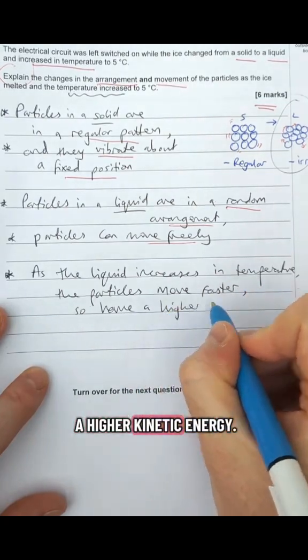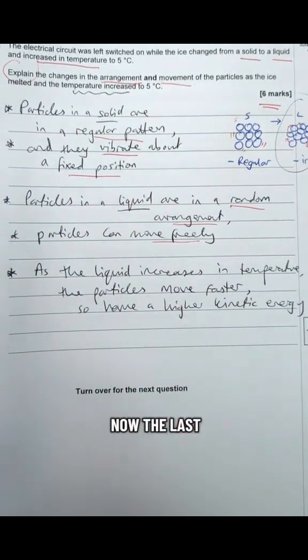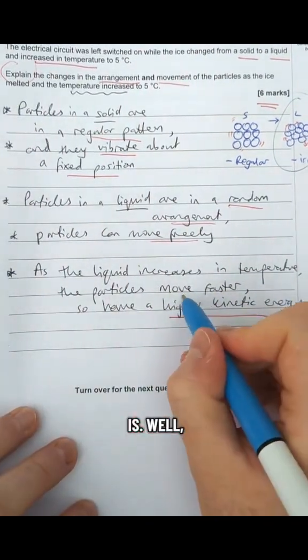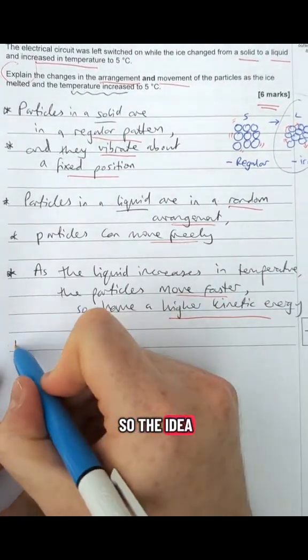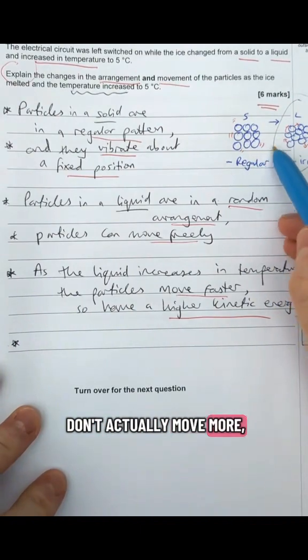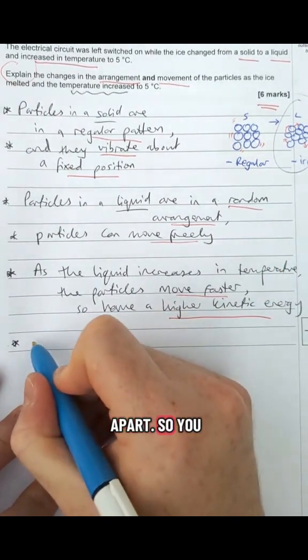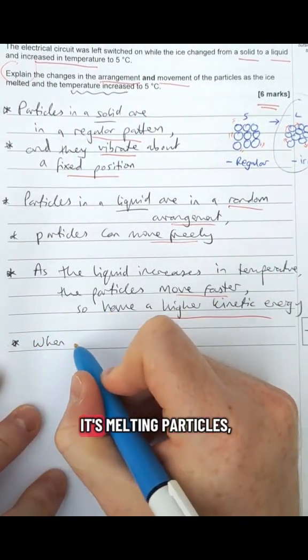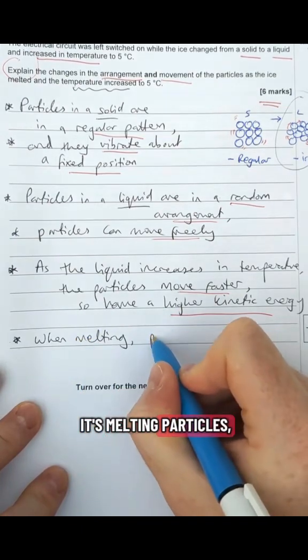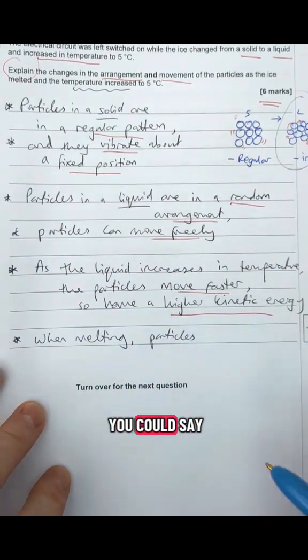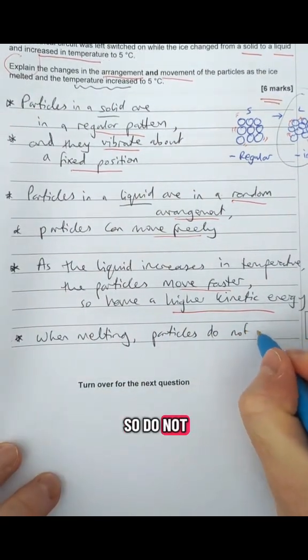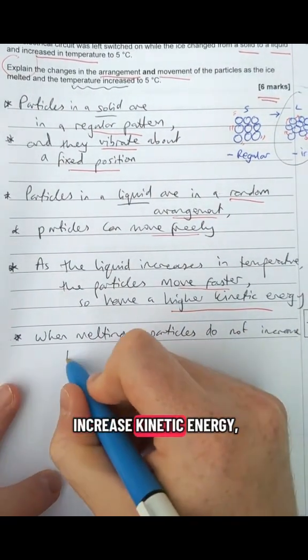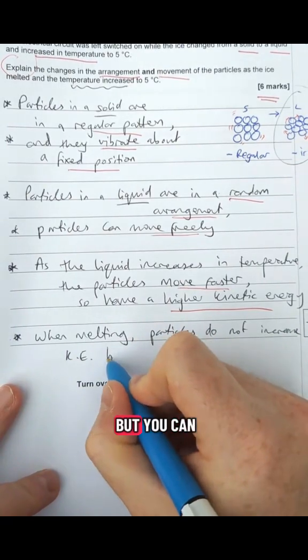Now the last point we could say is what's happening when the change of state is happening. The idea is the particles don't actually move more, they just break apart. So when it's melting, particles do not move faster and do not increase kinetic energy, but they move further apart so their potential energy increases.